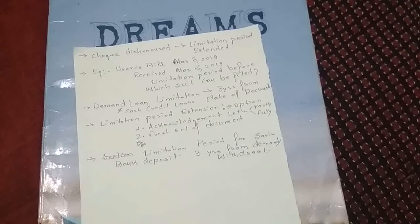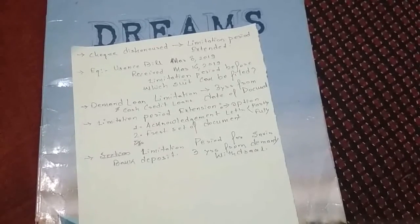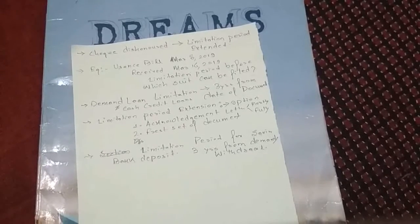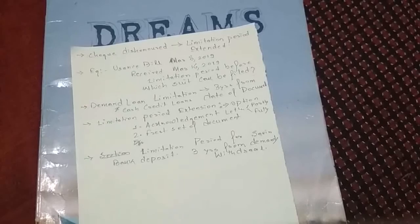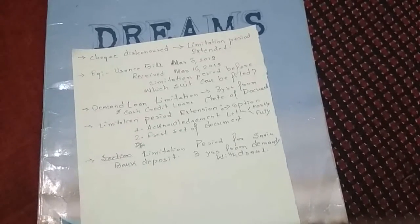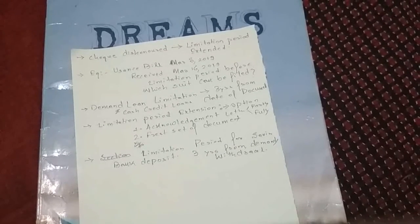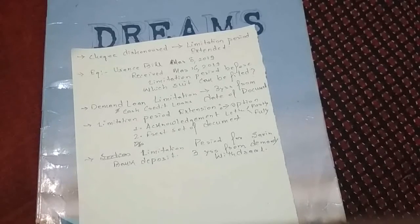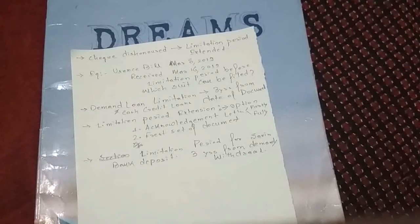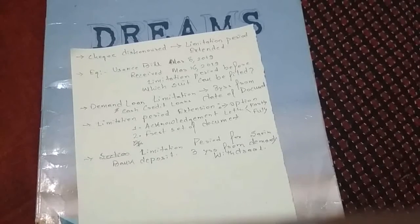For demand loans and cash credit loans, the limitation period is three years from the date of documentation. There are three options for extending the limitation period: first, the acknowledgement letter or BC letter — either for partial or full amount; second, a fresh set of documents that explicitly mention the outstanding loan amount and repayment terms, which can also extend the limitation period. For saving bank deposits, the limitation period is three years from the demand or withdrawal date.